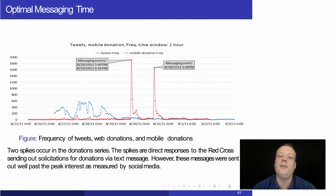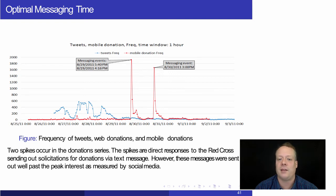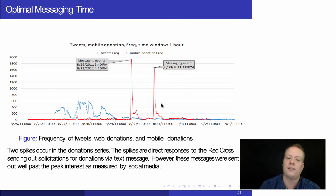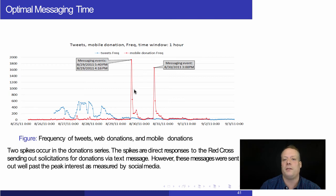The question we focused on first: given that we can look at Twitter data and see these interesting impacts, when would be the optimal time to send out a text message to all of the Red Cross's followers asking for donations? When we looked at both the donation data and the tweet data, we found that the Red Cross sent out two different text messages for Irene — one on August 29th and one on August 30th — and those were when they got the most donations.